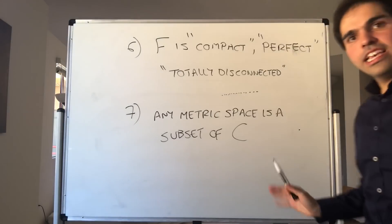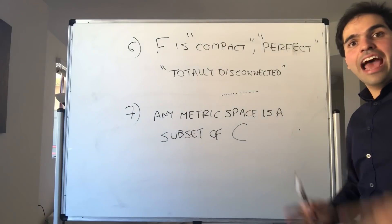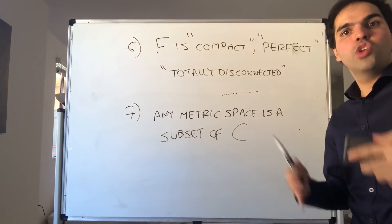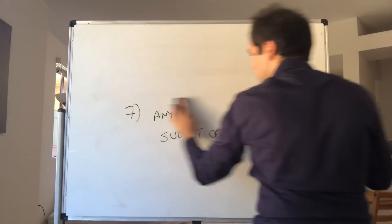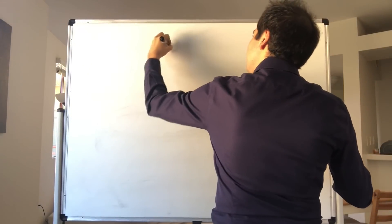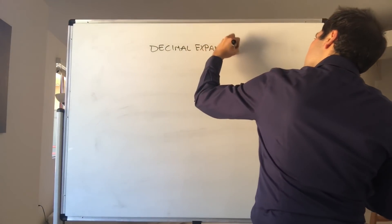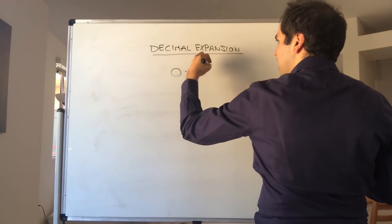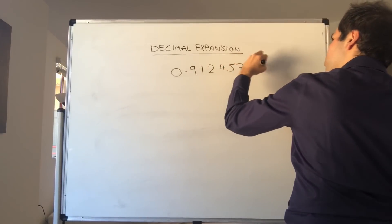Last thing I want to say: even though it's such a weird set, there's a very natural description of the Cantor set in terms of ternary expansions — expansions in base three. A decimal expansion is just the expansion of a number where the digits are between zero and nine: 0.9124578001234...